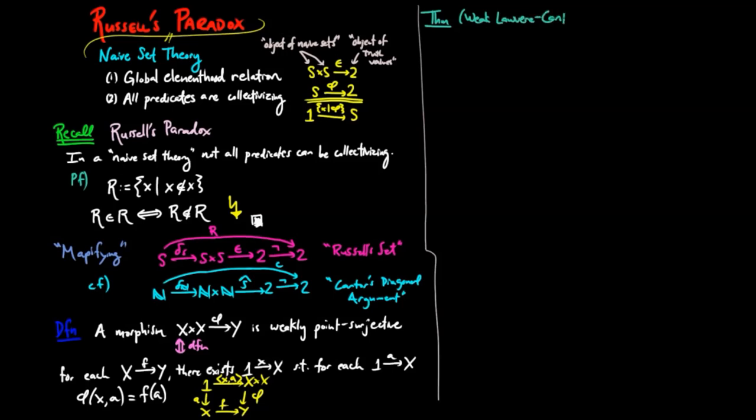Then we have the weak Levere Cantor theorem. Let E be a category with finite products. If there exists a weakly point surjective morphism phi from x by x to y, then y has a fixed point property.